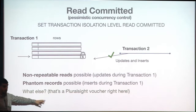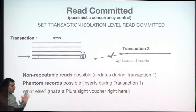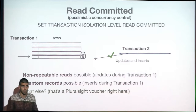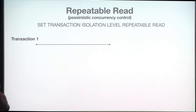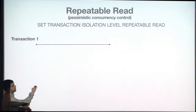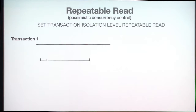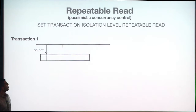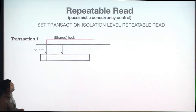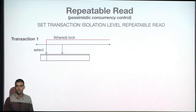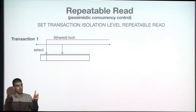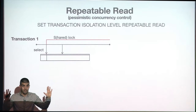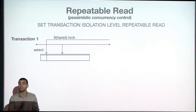If any of those problems — non-repeatable reads, phantom records, or the missed-row issue — are a business problem, we have to go to the next level. We have to go to repeatable read. In repeatable read, once I start my transaction and select, I stop releasing the shared lock.